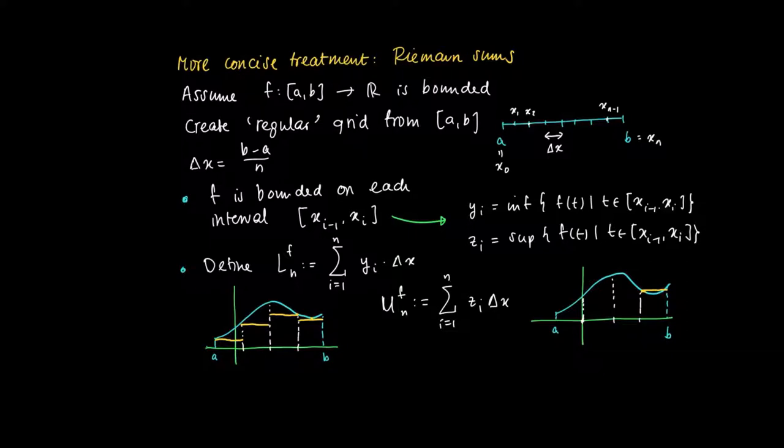So by definition, each of the rectangles is now above the graph, so we get an upper estimate for the surface area enclosed by the graph.